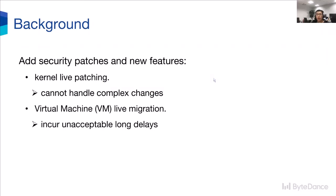With the development of technology, the VM has to be frequently updated and restarted to add security patches and new features. There are two existing Live Update methods to improve cloud availability: KVM Live Patches and Virtual Machine Live Migration. However, they both have serious drawbacks. Kernel Live Patches cannot handle complex changes, for example, changes to persistent data structures. VM Live Migration cannot handle the pass-through device, and it may incur unacceptable load delays because Live Migration needs to copy memory from the old QEMU to the new QEMU.